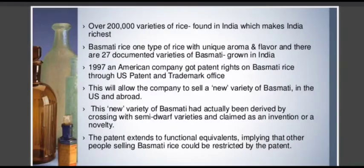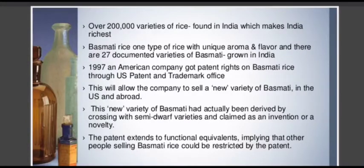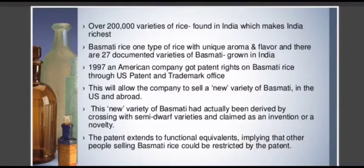Taking the example of rice: over 2 lakh varieties of rice are found in India, making India the richest in rice biodiversity. Basmati rice is one type with unique aroma and flavour, with 27 documented varieties grown in India. In 1997, an American company got patent rights on basmati rice through the US Patent and Trademark Office, allowing them to sell a new variety of basmati in the US and abroad. This variety had been derived by crossing with semi-dwarf varieties, yet was claimed as an invention, which is a wrong notion. The patent extends to functional equivalents, implying other people selling basmati could be restricted.